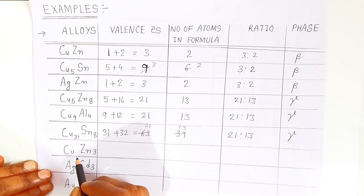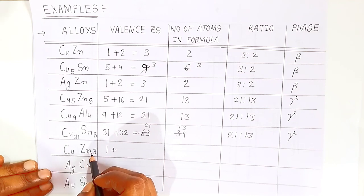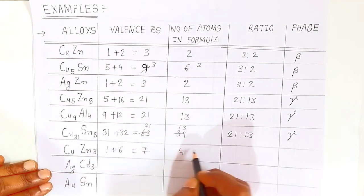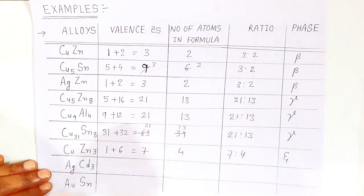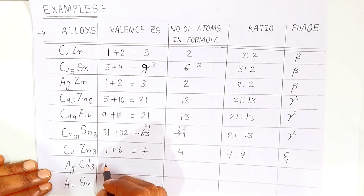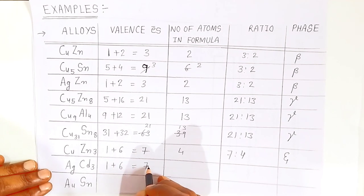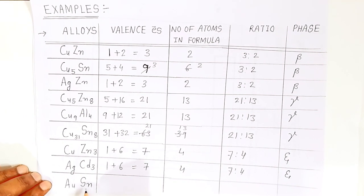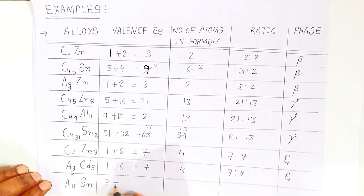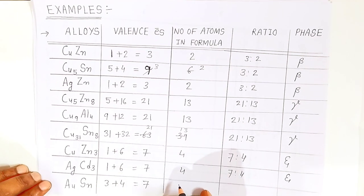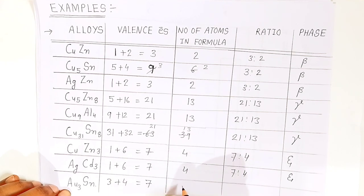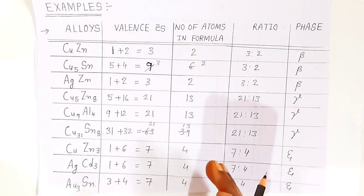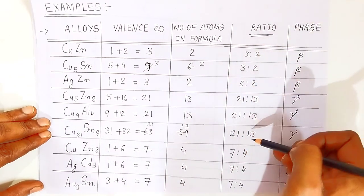For copper-zinc alloy Cu₁Zn₃: copper valence electron is 1 and three zinc atoms give 6, total valence electrons 7. Total number of atoms is 4. Ratio is 7/4 — this is epsilon phase. Same for silver-cadmium: silver valence 1, cadmium 3×2=6, total 7; atoms 4; ratio 7/4 — also epsilon phase. With the ratio we can determine the phases.